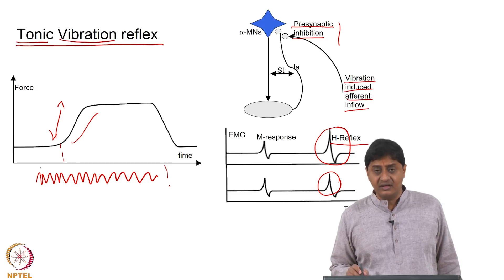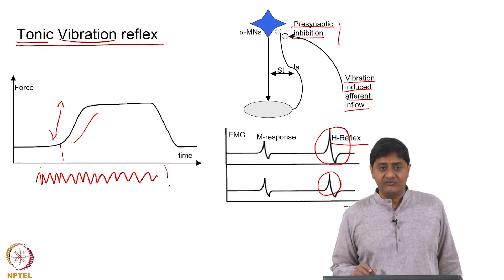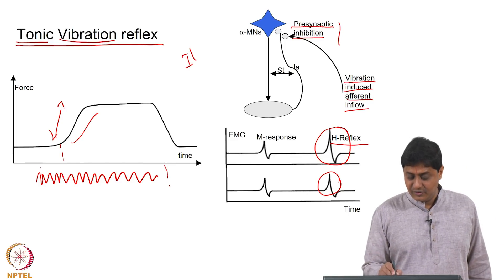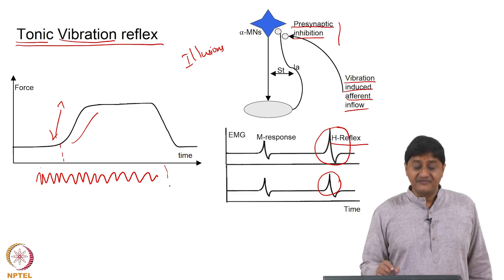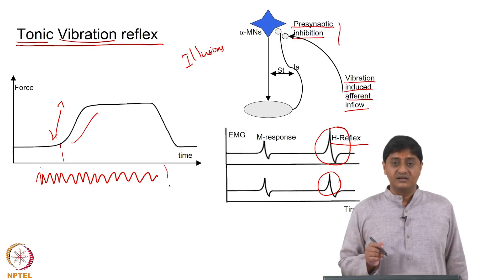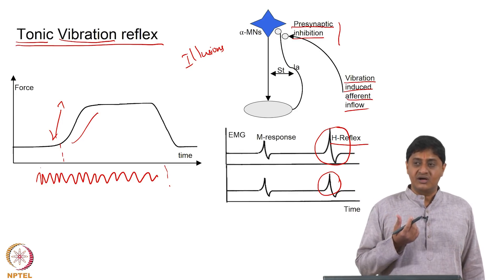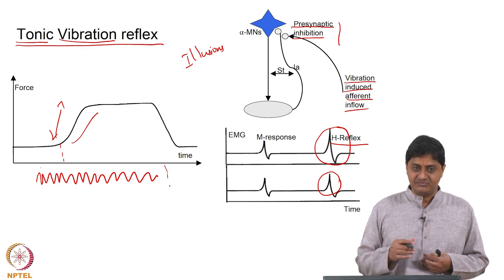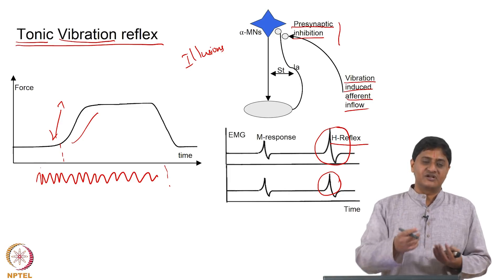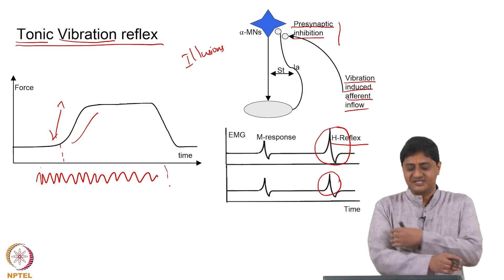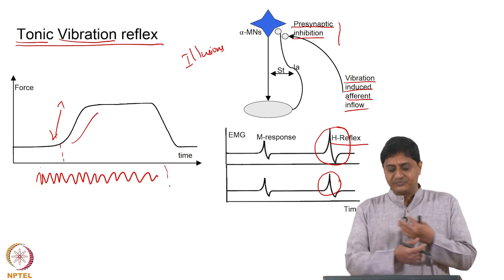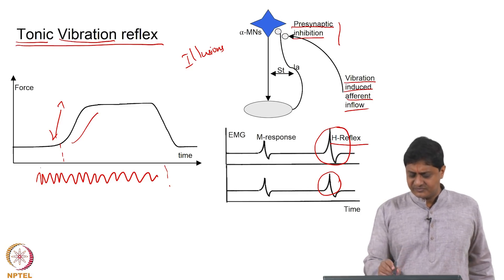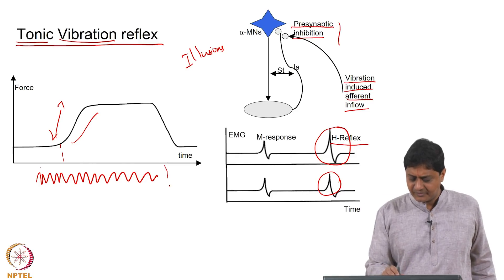H reflex amplitude or monosynaptic reflex amplitude can be modified by vibrations. There are also other things that can happen — illusions. If a person's eyes are closed and you vibrate the muscles of the upper arm, it gives people illusions of limb positions that cannot be achieved by anatomical means — for example, hyper-extension of the elbow is felt. Several such phenomena exist.